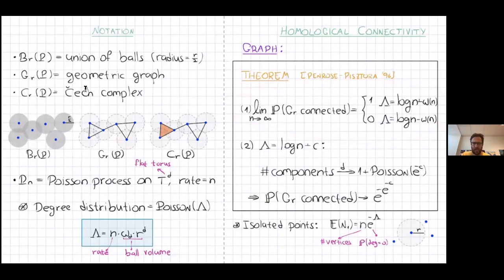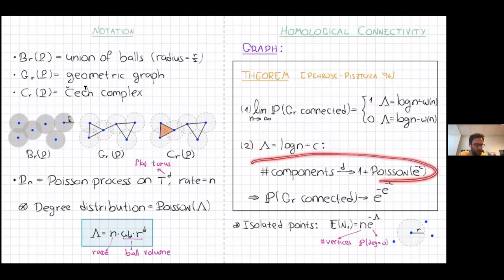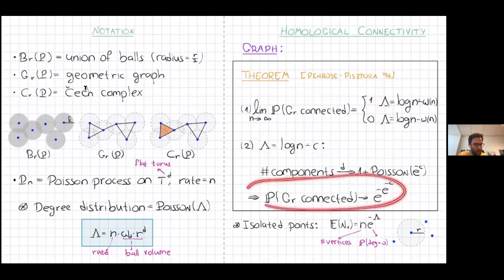We take the geometric random graph G_R and ask: what is the probability it is connected? In the limit, if the expected degree lambda is slightly above or slightly below log N, the probability goes to either one or zero. Lambda is the expected degree coming from the volume of the ball, but otherwise it's similar to Erdős–Rényi. Inside the critical window you can also show Poisson convergence for the number of components.